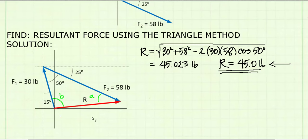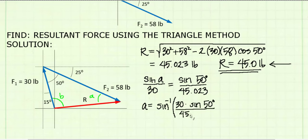I can now use the law of sines to find the other interior angles in my triangle. The only other angle I need is angle B, but for academic reasons, I'm first going to find angle A using law of sines. To find angle A, I will take the sine of A divided by the opposite side, which is 30 pounds, equal to the sine of 50 degrees divided by its opposite side, which is the resultant force 45.023 pounds. I find that A is equal to 30.693 degrees.